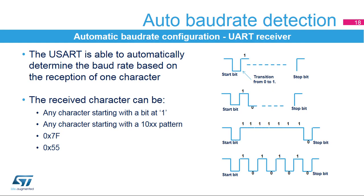The USART receiver is able to detect and automatically configure the baud rate based on the reception of one character. The received character can be any character starting with bit 1. In this case, the USART measures the duration of the start bit from falling edge to rising edge. For any character starting with bits 1,0, the USART measures the duration of the start and of the first data bit. The duration is measured from falling edge to falling edge, ensuring better accuracy in the case of slow signal slopes.